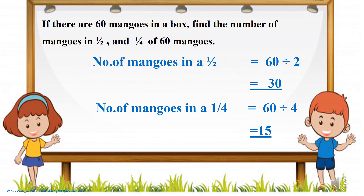Now here is another question. If there are 60 mangoes in a box, find the number of mangoes in half and quarter of 60 mangoes. The full amount is 60. Number of mangoes in half: 60 divided by 2 equals 30. Number of mangoes in quarter: 60 divided by 4 equals 15.